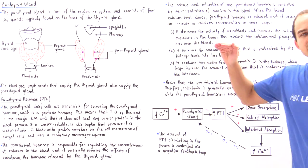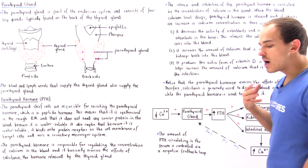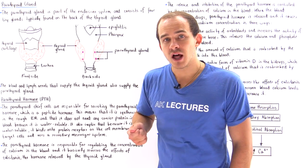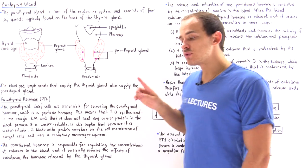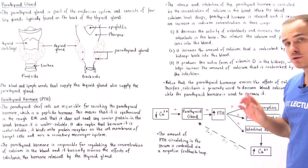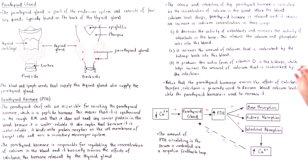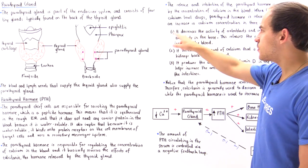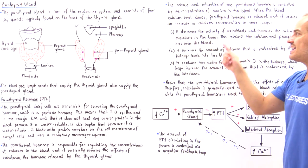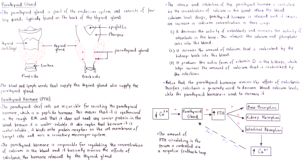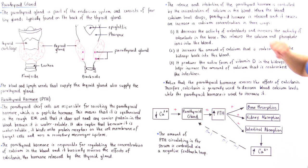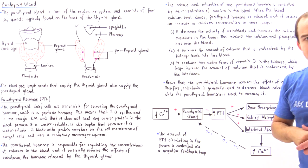This basically increases the concentration of calcium inside our blood as a result of three different things. Firstly, it increases the activity rate of osteoclasts and decreases the activity of osteoblasts.